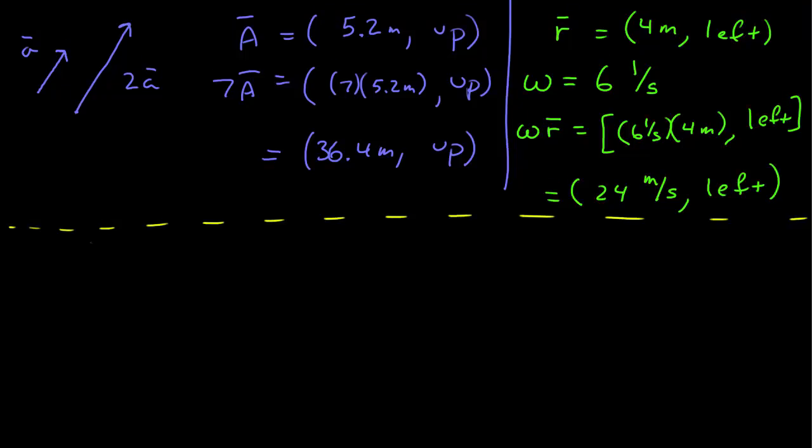Now let's look at multiplication by negative 1. If we multiply a by negative 1, that just changes the direction. So that's 5.2 meters down, the opposite direction of the original vector. And if we take negative 1 to our vector r, we get 4 meters, same magnitude, opposite direction.